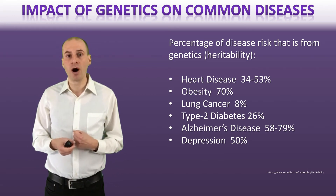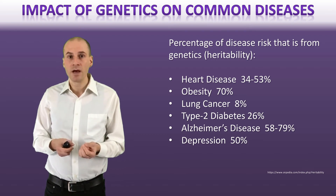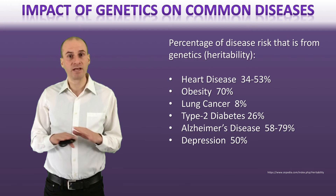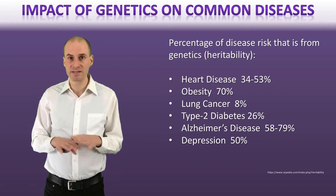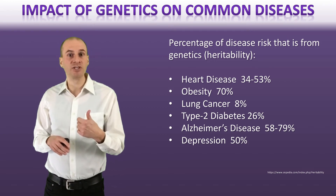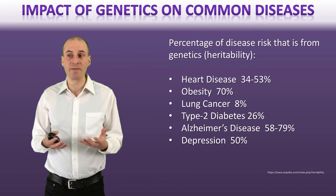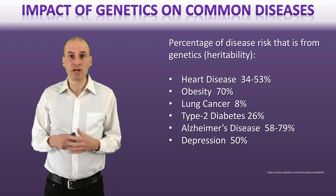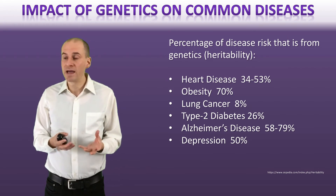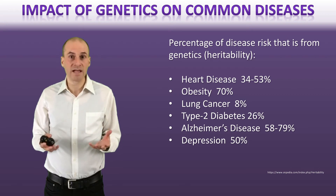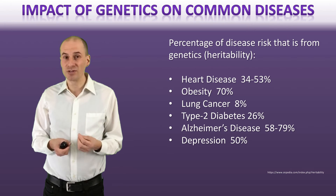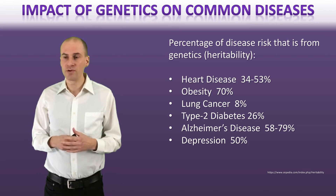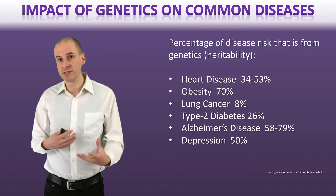Lung cancer is an example where there is a genetic component to risk, but most of your risk for lung cancer is actually due to whether or not you smoke — the genetic component is only about 8%. For type 2 diabetes, estimates range up to about 50% from genetics. Alzheimer's disease is actually quite high — 60 to 80% of your risk is genetic, and certain genetic traits like APOE4 can increase your risk about 10 times the average. Depression is also one where there's a large genetic component and it's largely inherited.